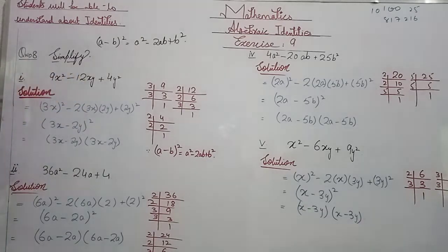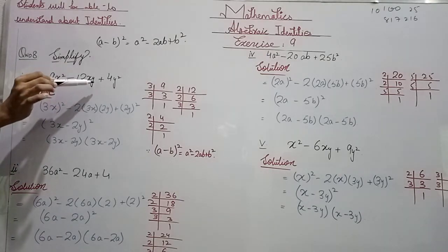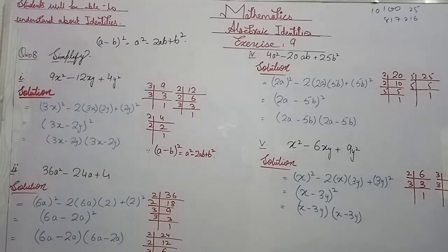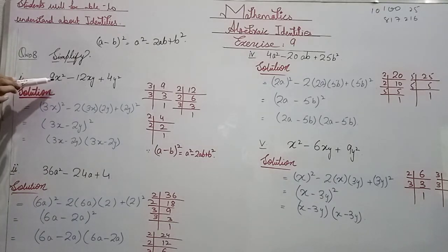For 9x² minus 12xy plus 4y², we need to find the factors. Check the three terms and find what values of a and b satisfy the identity a² minus 2ab plus b².